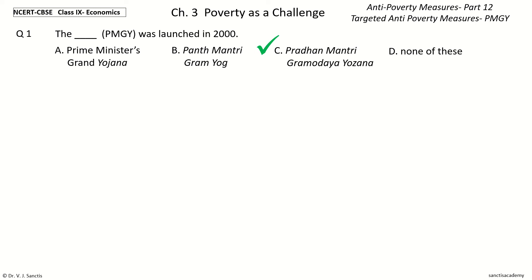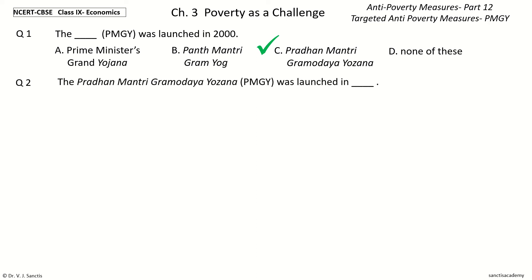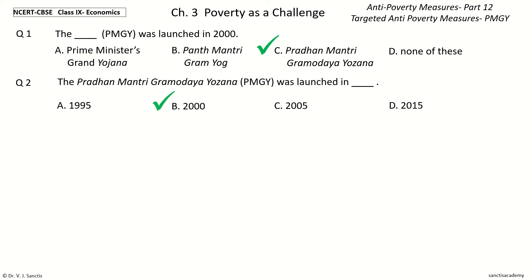So, the Pradhan Mantri Gramodaya Yojana was launched in 2000. Question 2: The Pradhan Mantri Gramodaya Yojana (PMGY) was launched in blank. The options are: 1995, 2000, 2005, or 2015. Your time to choose. And the answer is 2000.